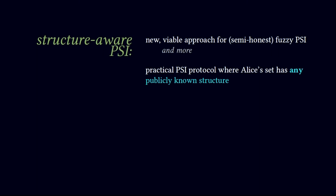In this work we introduce a new framework for structure-aware private set intersection, which gives a very viable approach for doing semi-honest fuzzy PSI as mentioned before. We give very practical, symmetric key based PSI protocols for the case when Alice's input set has some publicly known structure.